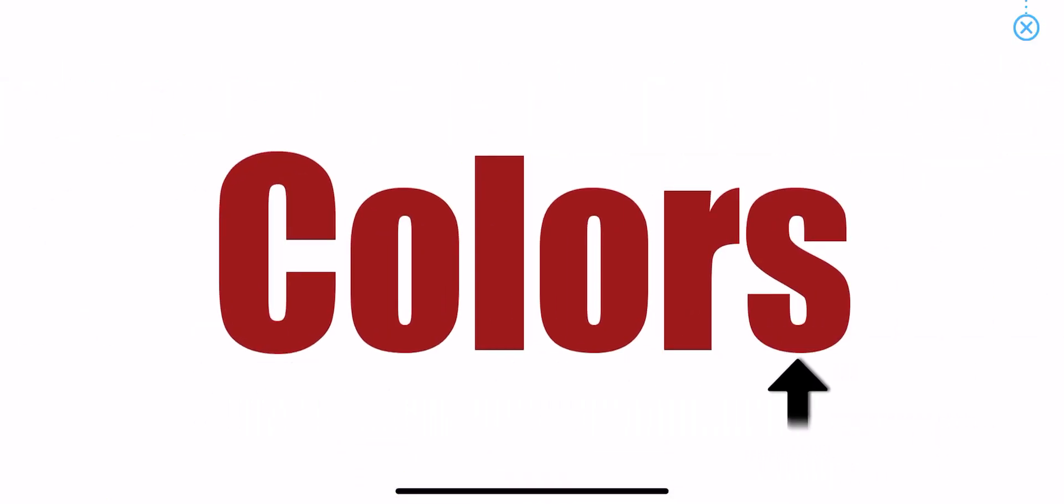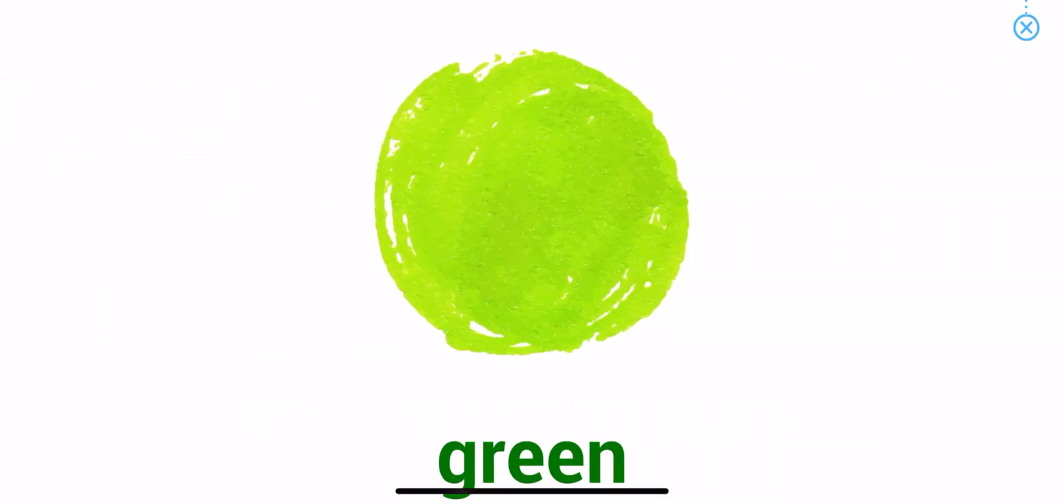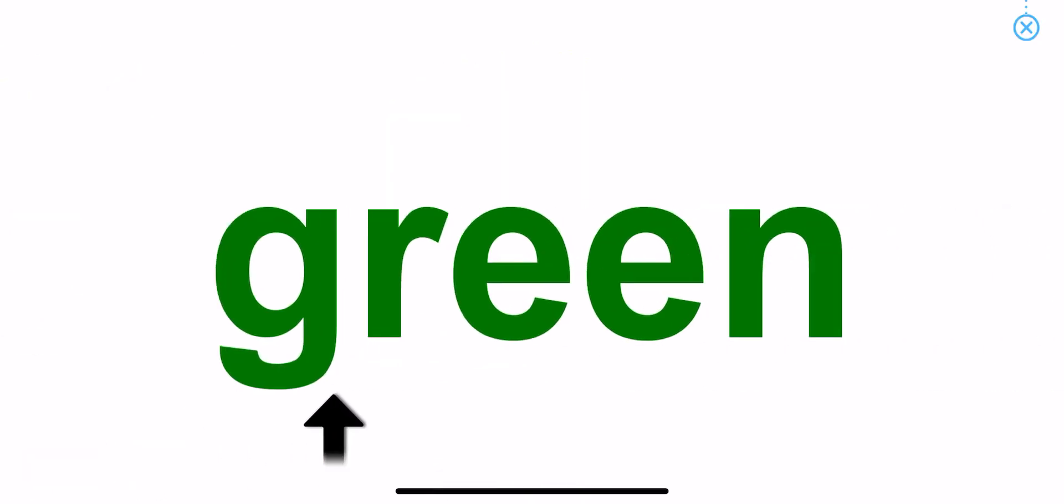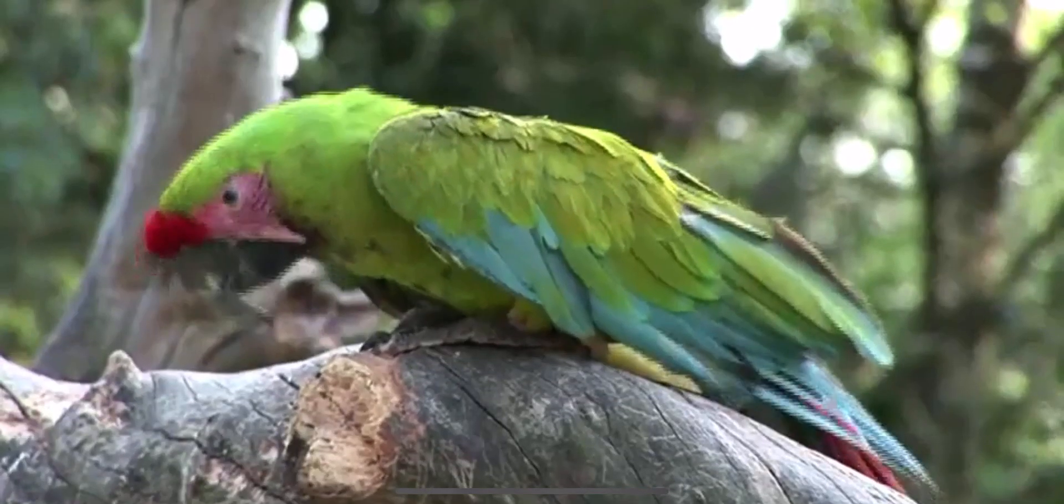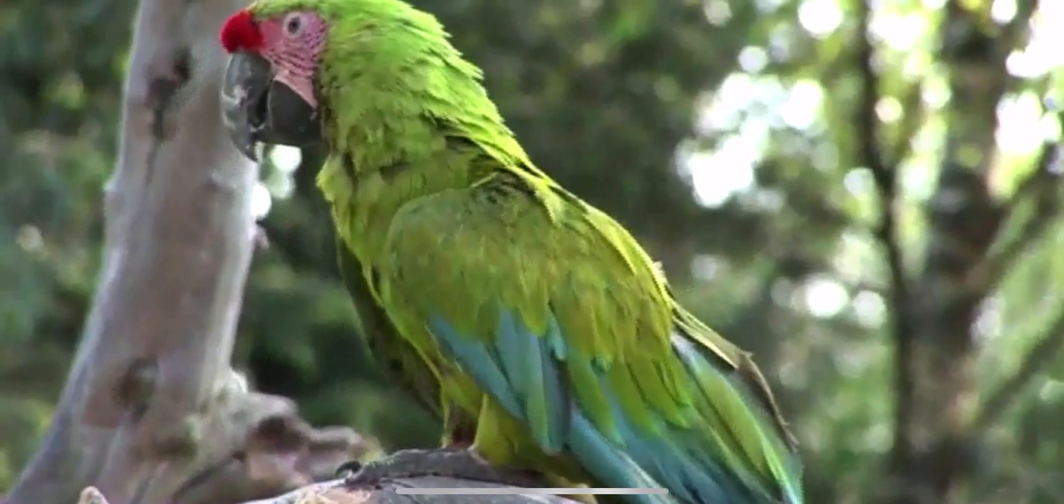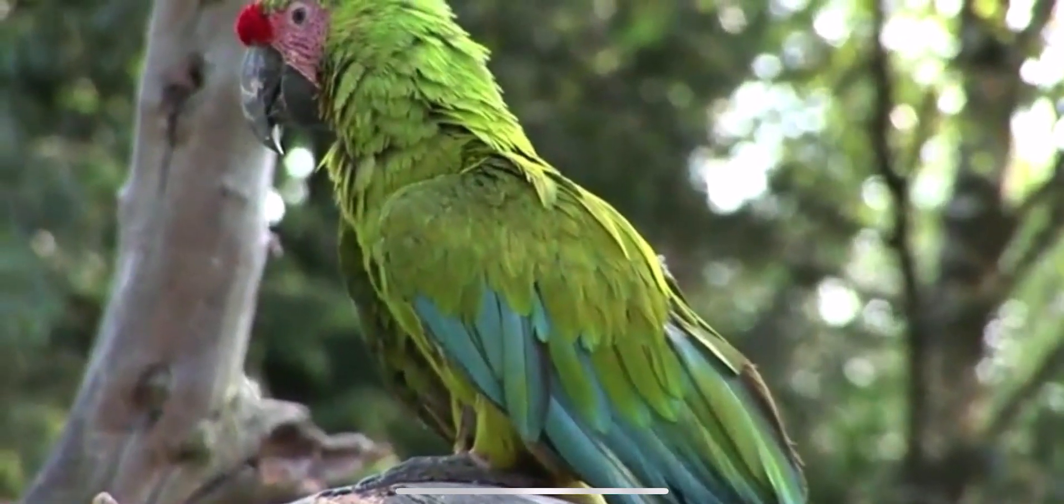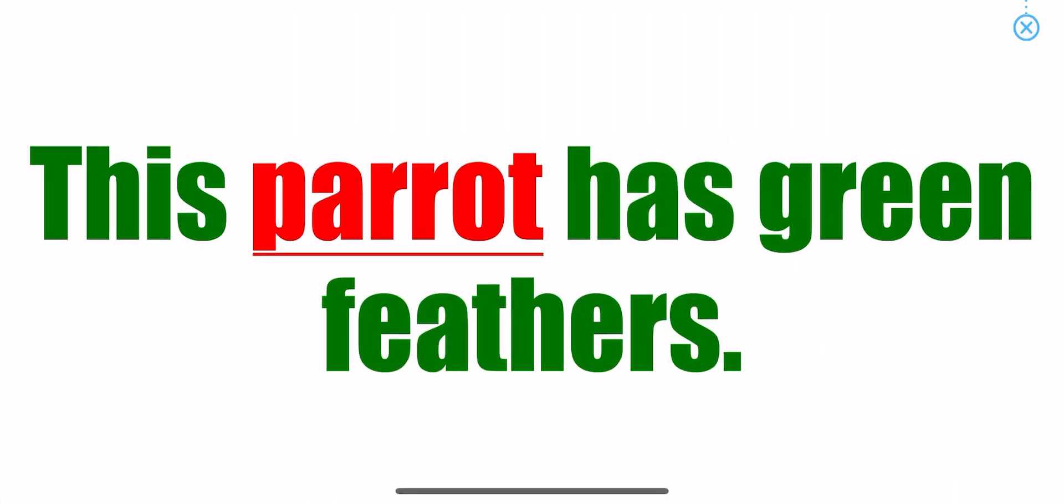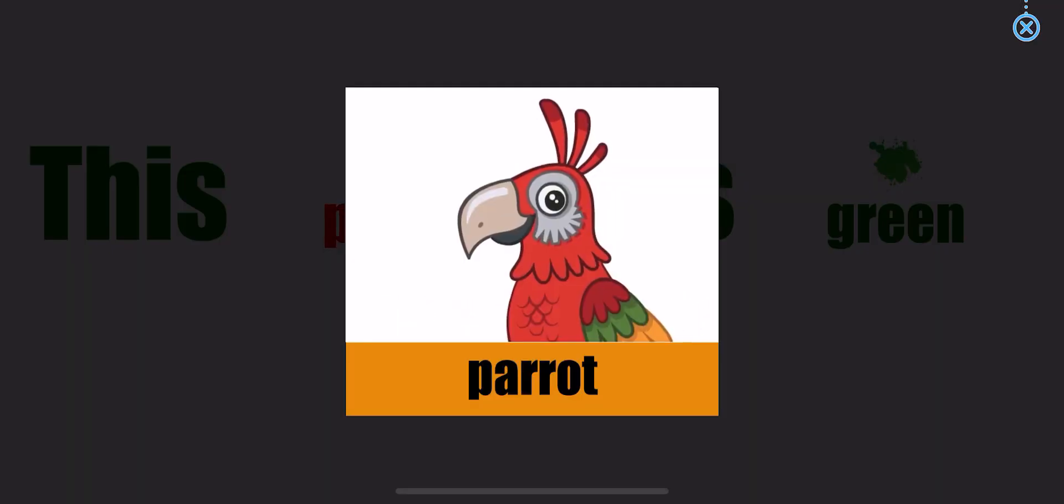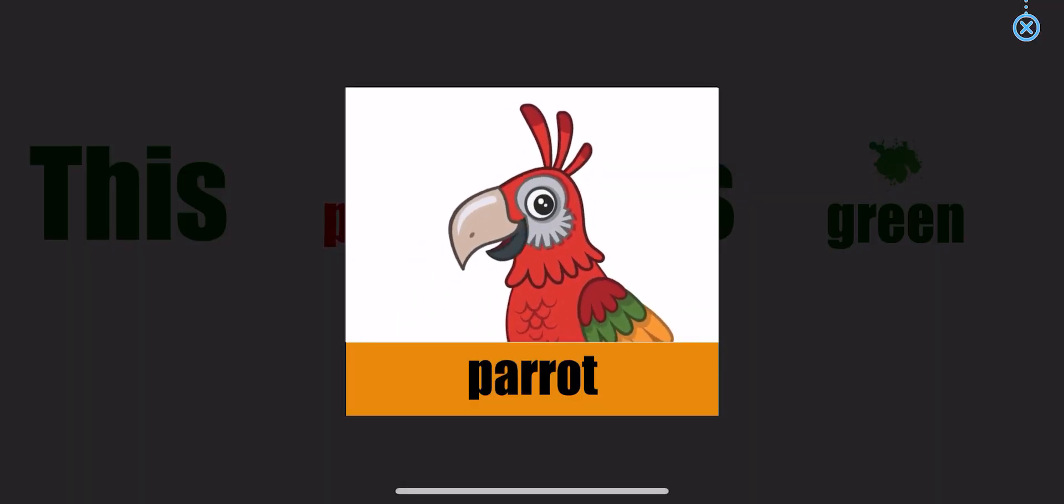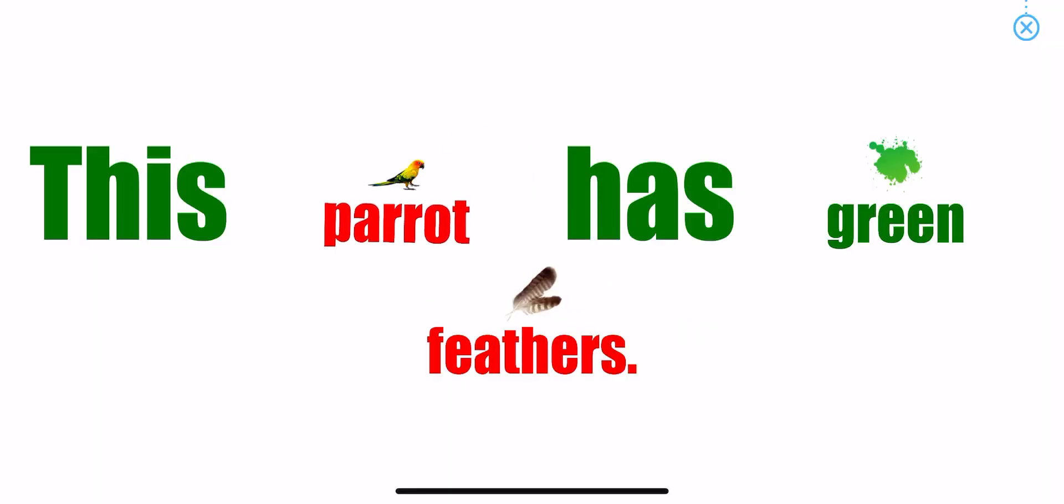Colors. Green. This parrot has green feathers. This parrot has green feathers. Parrot. Yellow. Feathers. Yellow.